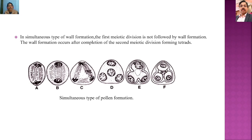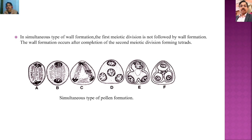In the simultaneous type of wall formation, the first meiotic division is not followed by wall formation. Wall formation occurs only after completion of the second meiotic division. As seen in the diagram, the cell undergoes the first meiotic division forming two nuclei, then the second meiotic division forms four nuclei, and only after formation of the four nuclei is the wall laid down. In this way, four spores or pollen grains are formed.